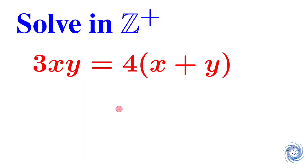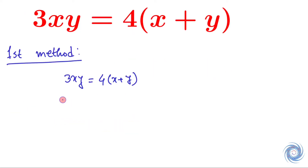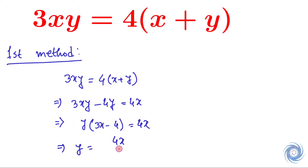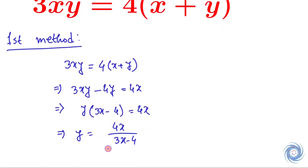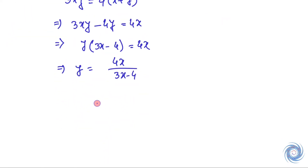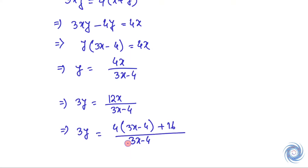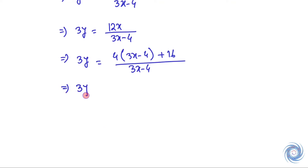We will solve this equation in two methods. Let us rewrite the equation. From here we have y equals 4x over 3x minus 4. This can be rewritten, and finally we have 3y equals 16 over 3x minus 4, plus 4.